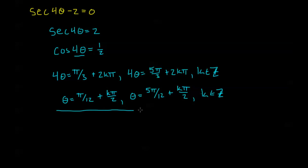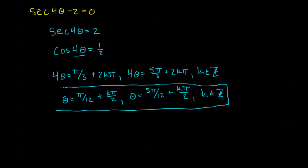And for the second general equation, θ equals 5π/12 plus kπ/2. We're done — easy peasy. We can't combine these two solutions. You can plug in some values of k to try it out, but these two general solutions don't have any intersecting solutions, so we can't simplify further.